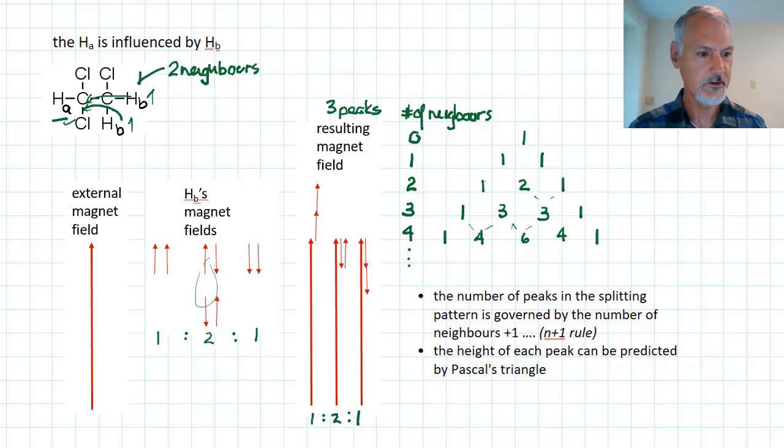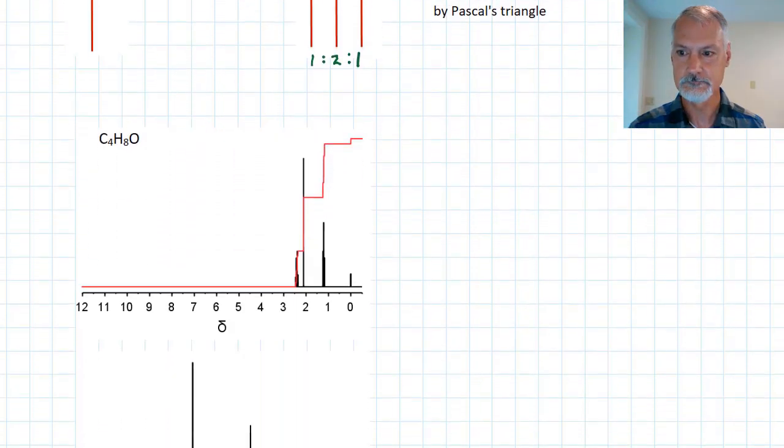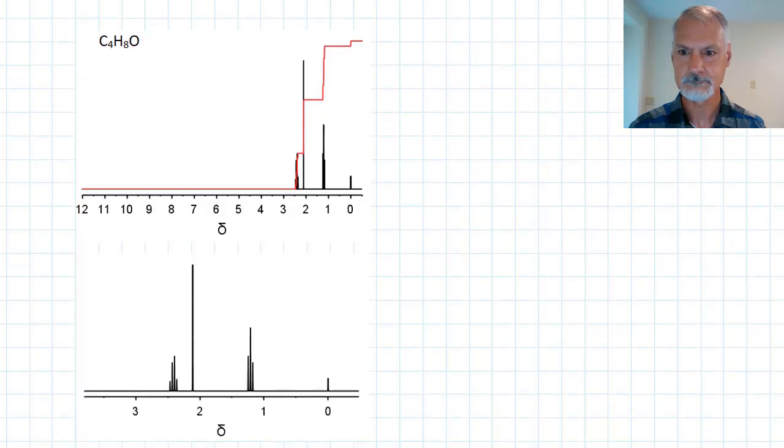Let's put this into practice down in an example. Suppose I'm given the molecular formula of a compound, C4H8O, and both the low resolution and the high resolution NMR. So, let's look at some possible structures that this could have.